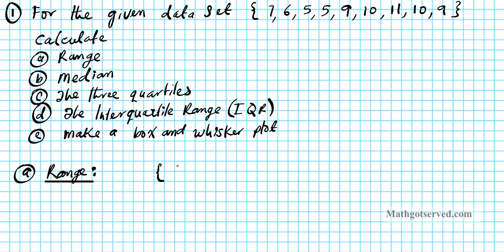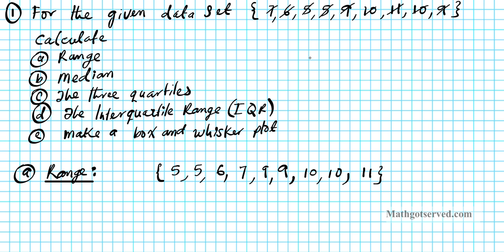Starting from the smallest: we have two 5's, then a 6, then a 7, no 8's, then two 9's, then two 10's, and then an 11. Let's count how many terms we have — 1, 2, 3, 4, 5, 6, 7, 8, 9 — excellent, so we have 9 elements in the set.